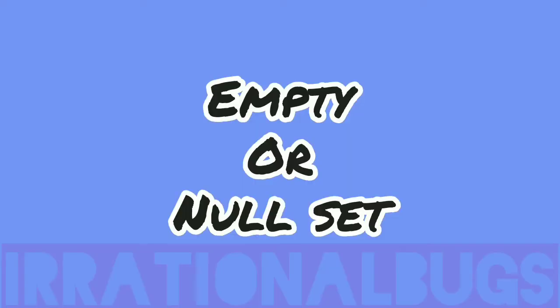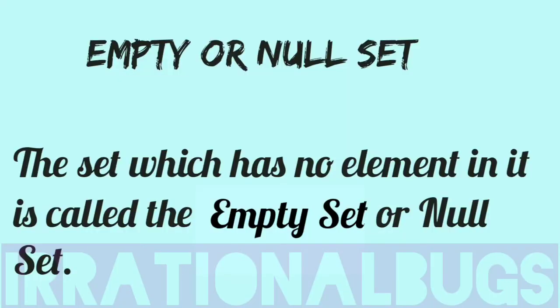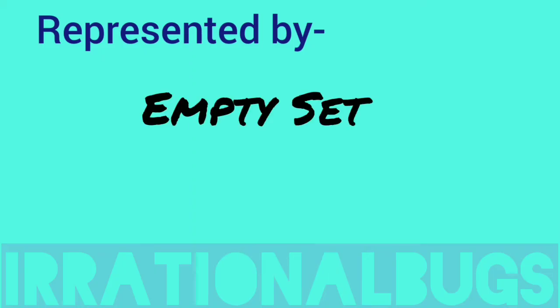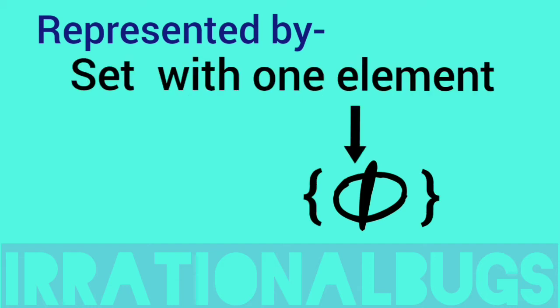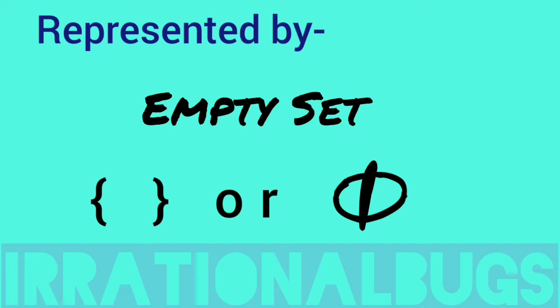Next we have empty set or null set. The set which has no element in it is called the empty set or null set. We can represent an empty set in the curly bracket or we can use phi. These two are null set symbols. But we can't write phi in parenthesis, because then it becomes an element.